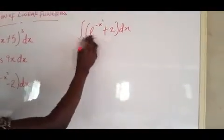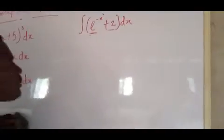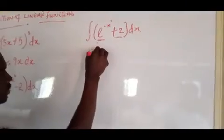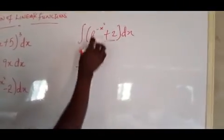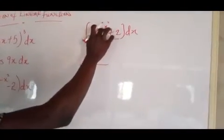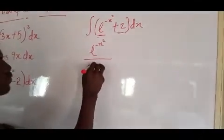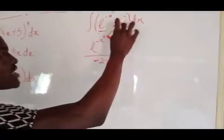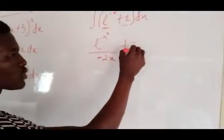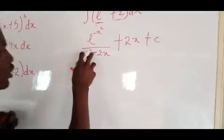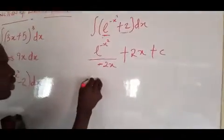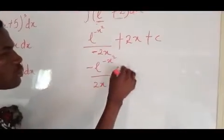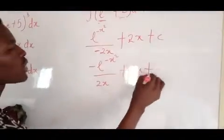Now this is what you do: you integrate each term separately. Write the first term back — e^(−x²) — all over the differential of (−x²). If you differentiate (−x²), you get −2x. Then integrate your 2, which gives 2x, plus c. The minus in the denominator goes up and becomes minus, so the final answer is: minus e^(−x²) over 2x, plus 2x, plus c.